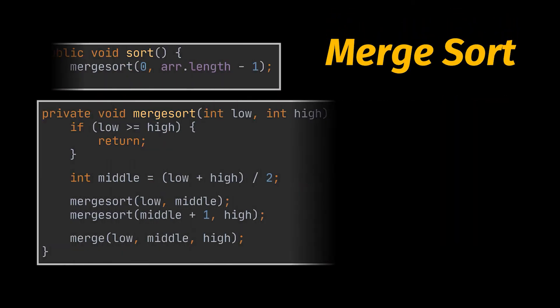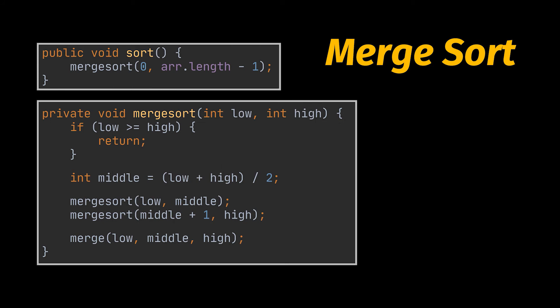Next on the list is the famous merge sort algorithm. Looking at the code, merge sort can be divided into three steps that are repeated recursively on every sub-array: first, dividing the array into two halves by fetching the middle element index; second, calling merge sort on each half; third, merging the two sorted halves.